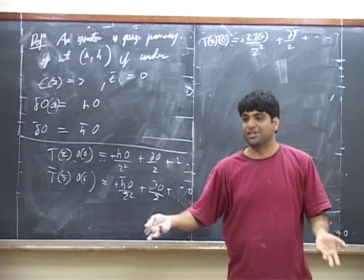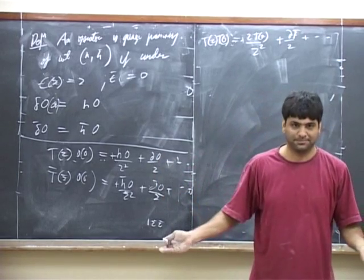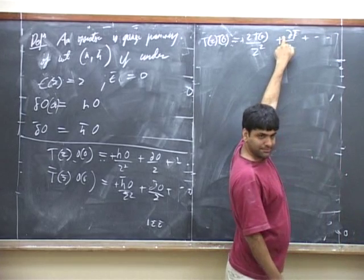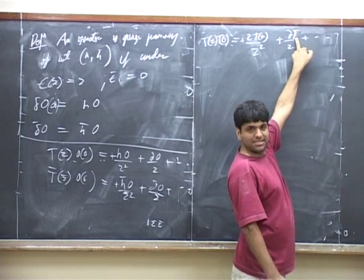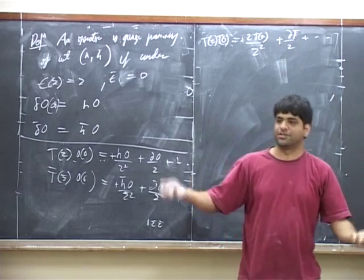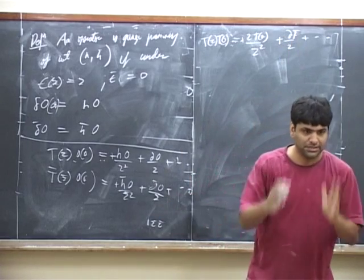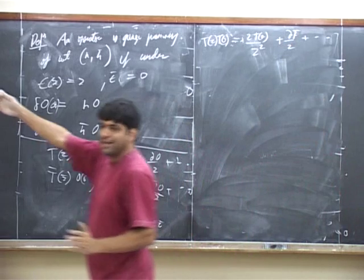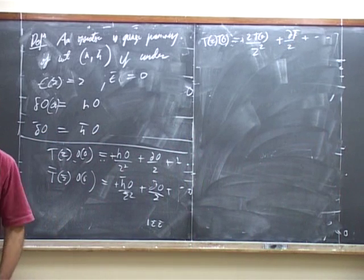1 over z squared is also dimension 2 because z squared is dimension minus 2. This also works because t is dimension 2, the derivative is dimension 1, and 1 over z is dimension 1, giving dimension 2. So everything that we have on the right hand side must be dimension 4.